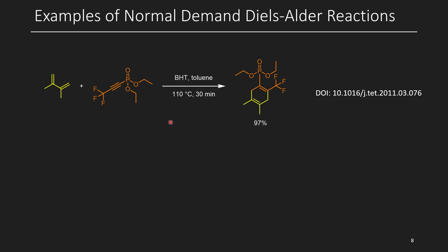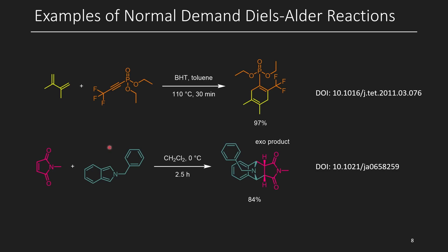Here are a couple examples of normal demand Diels-Alder reactions. The electron-donating groups on the diene are methyl groups — we actually have two methyl groups — and the dienophile is an alkyne that is electron-deficient from a phosphonate and a trifluoromethyl group. At 110°C for 30 minutes, there is high conversion to the corresponding cyclohexadiene. The extra double bond comes from using an alkyne instead of an alkene — you don't just have to use double bonds. In the next example, an isoindole reacts with a maleimide. This reaction occurs easily because the dienophile is electron-deficient and the diene is electron-rich, with the nitrogen acting as an electron-donating group.